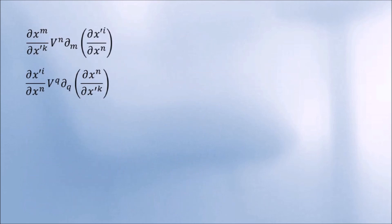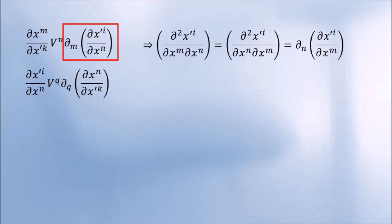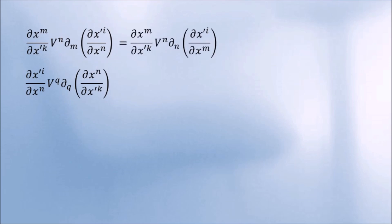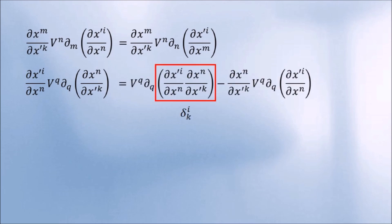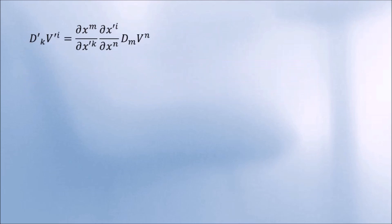To see this, we can use a couple of tricks. First, we use the fact that partial derivatives commute. Second, we use the chain rule to rewrite the second term like this. This guy is the Kronecker delta. So it vanishes. And there we have it. So, the covariant derivative of a vector is indeed a tensor. You can show using exactly the same steps that the covariant derivative of a tensor is also a tensor.